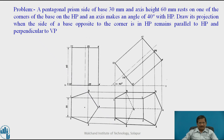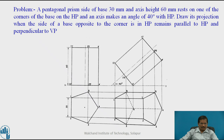In the second stage, the axis is making 40 degrees with HP. A shortcut is that when the axis makes 40 degrees, the base will make 50 degrees with HP. So take a resting point on the XY line, draw the base line at 50 degrees from there, then draw the axis and copy the rectangle from the first stage so that the base makes 50 degrees or the axis makes 40 degrees with HP. Complete the second stage front view.